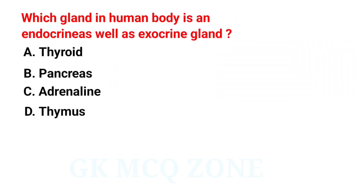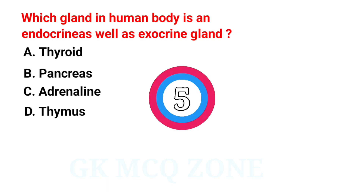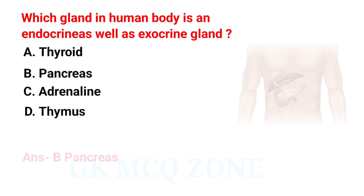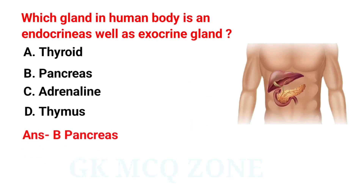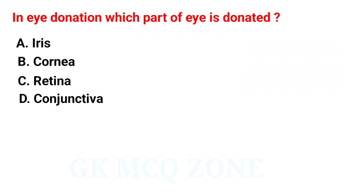Which gland in the human body is both an endocrine as well as an exocrine gland? The correct answer is option B: Pancreas.